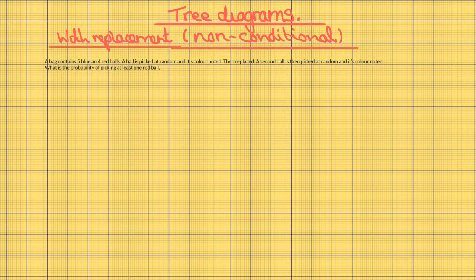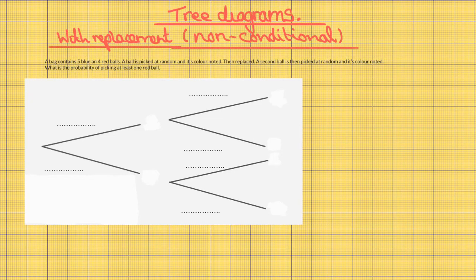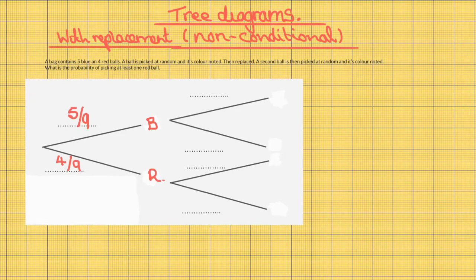Tree diagrams with replacement — non-conditional. A bag contains five blue and four red balls. A ball is picked at random and its color noted, then replaced. A second ball is then picked at random and its color noted. What is the probability of picking at least one red ball? First, draw a tree diagram, then add the events and probabilities. On the first pick you can get blue or red. Blue has the probability of five out of nine.